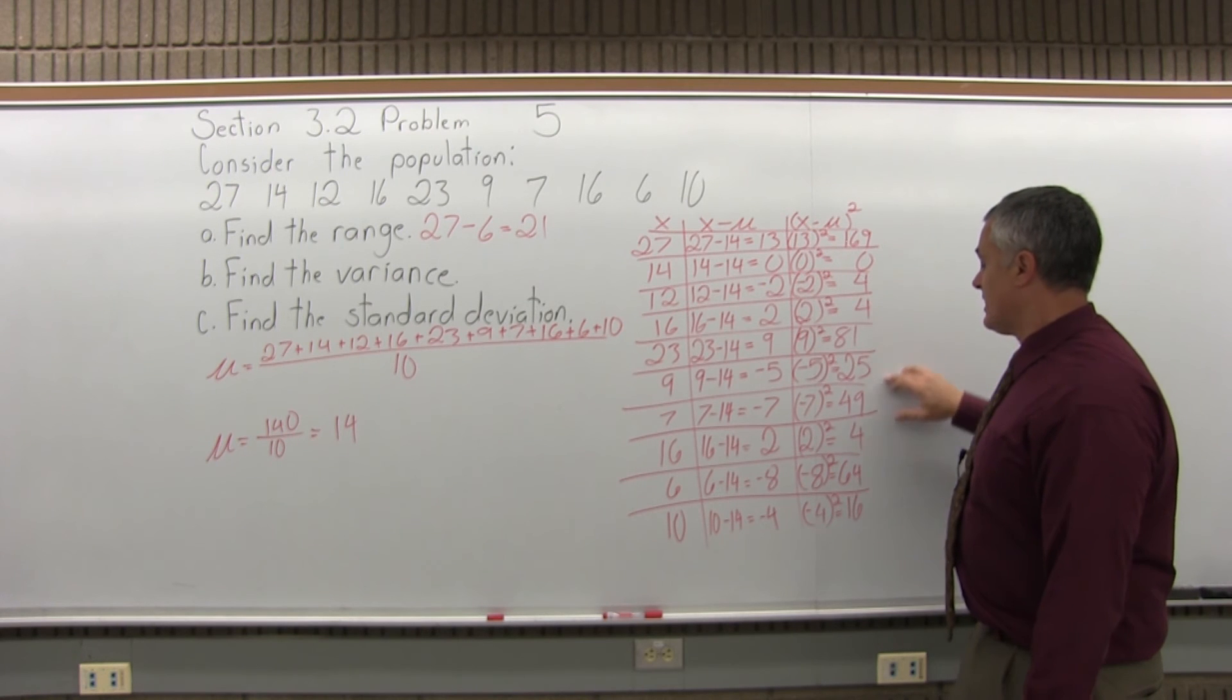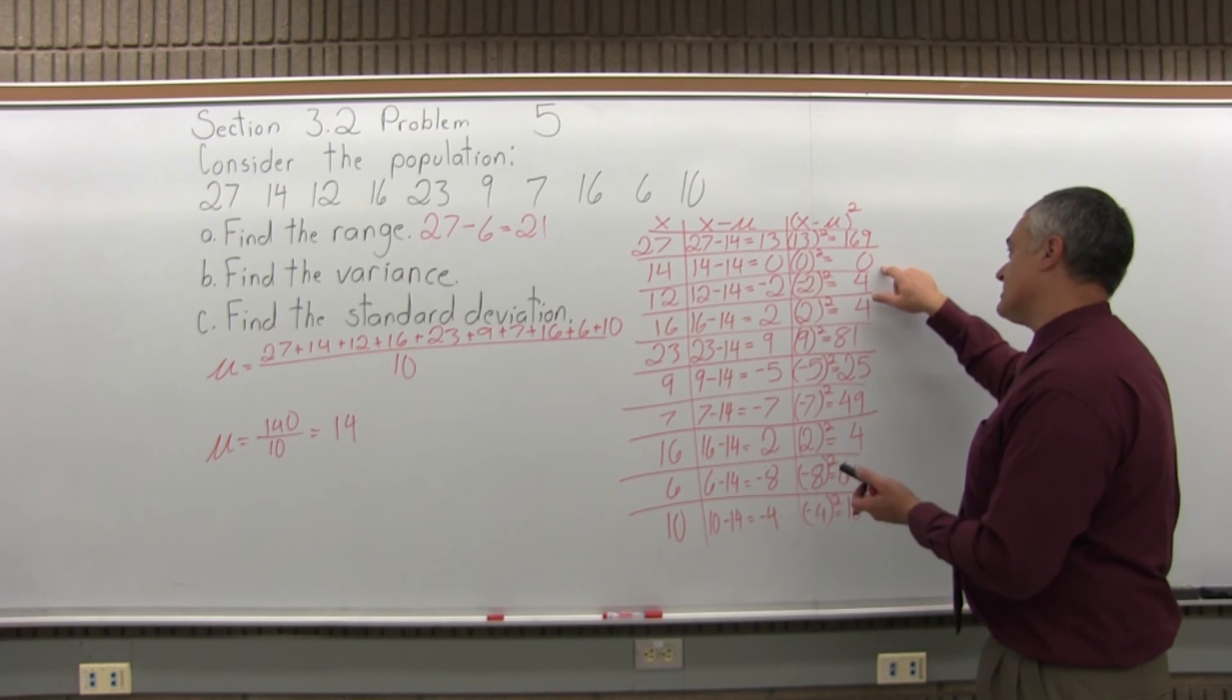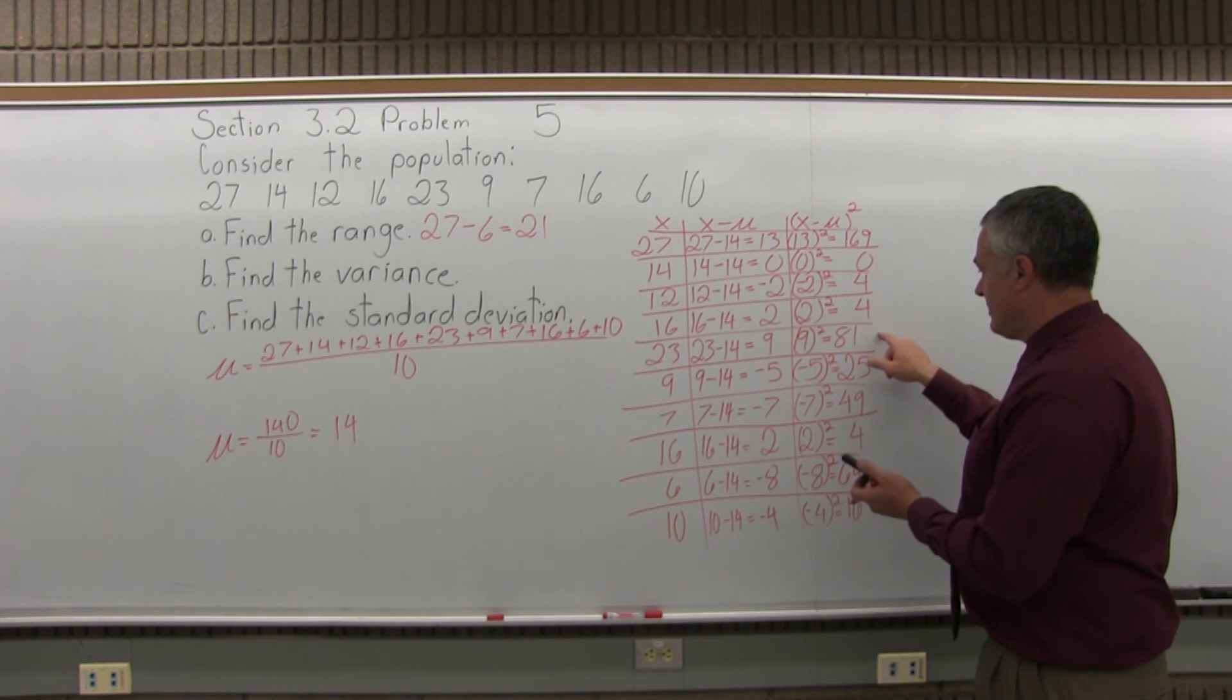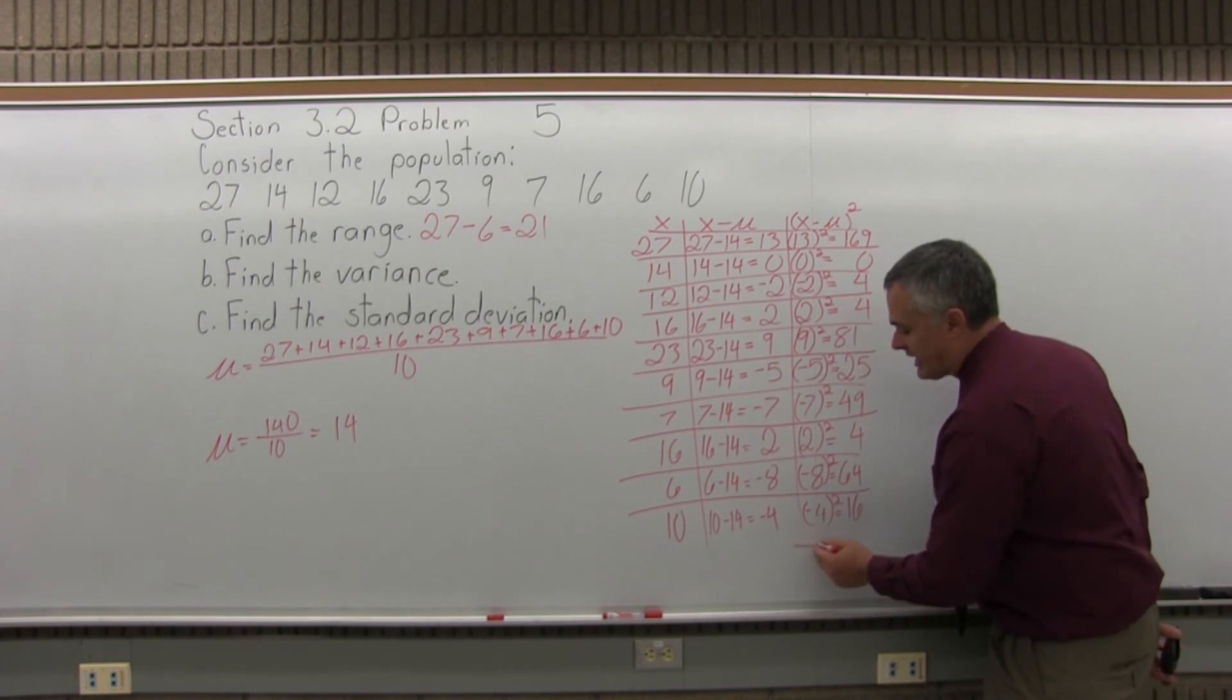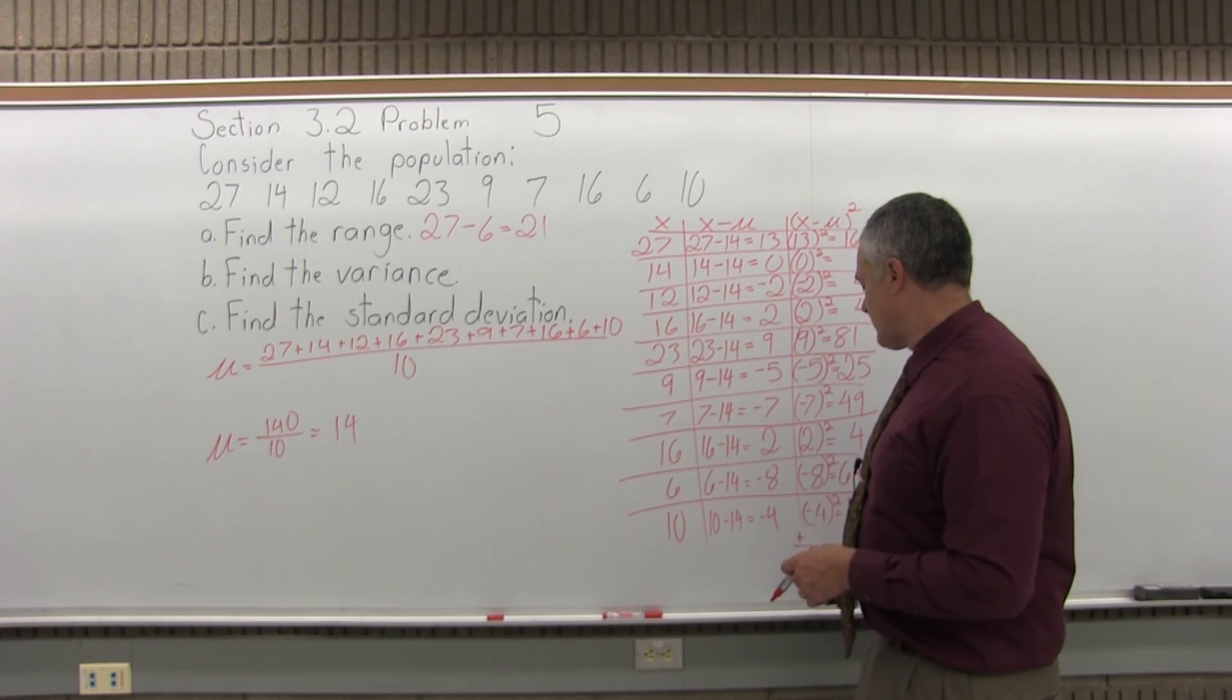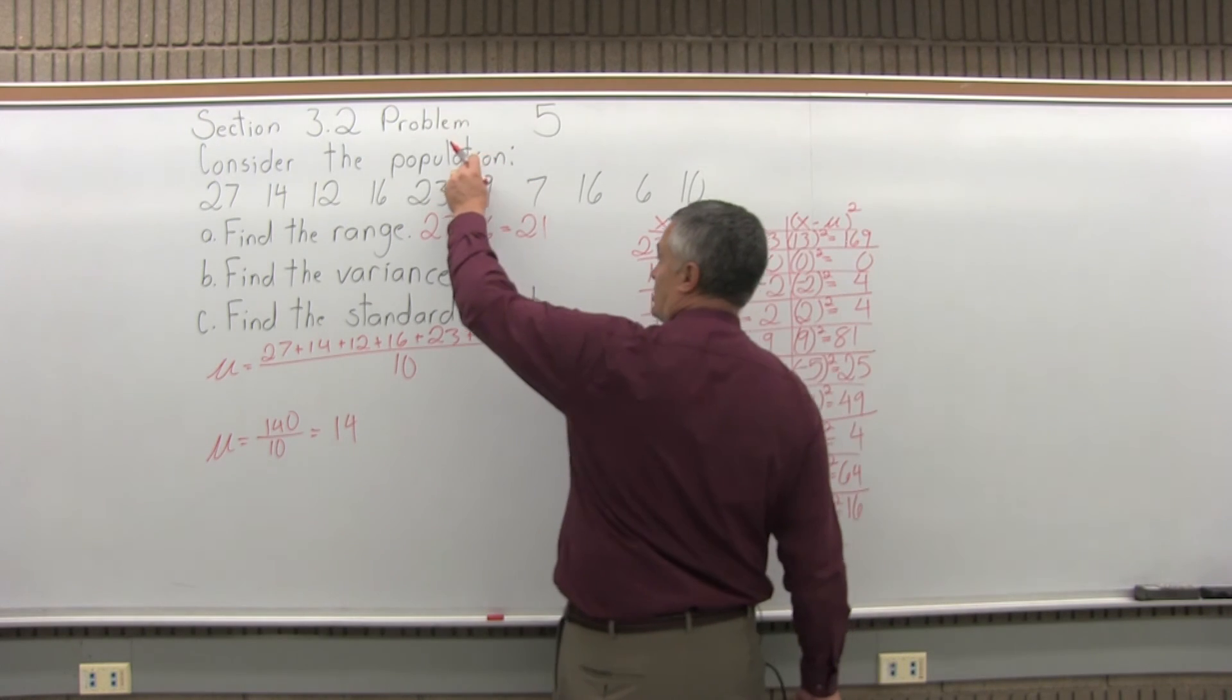So now, step 3: get a total of the last column. I'll use the calculator to help me out with that. I'll do 169 plus 4 plus 4 plus 81, then plus 25, plus 49, plus 4, plus 64, plus 16. So, my total comes out to 416. That's the answer for step 3. The total of the last column is 416. Step 4: take the result from step 3, divide by n minus 1 if you have a sample, divide by n if you have a population. This is a population, so divide by n, where n is how many data values in the question.